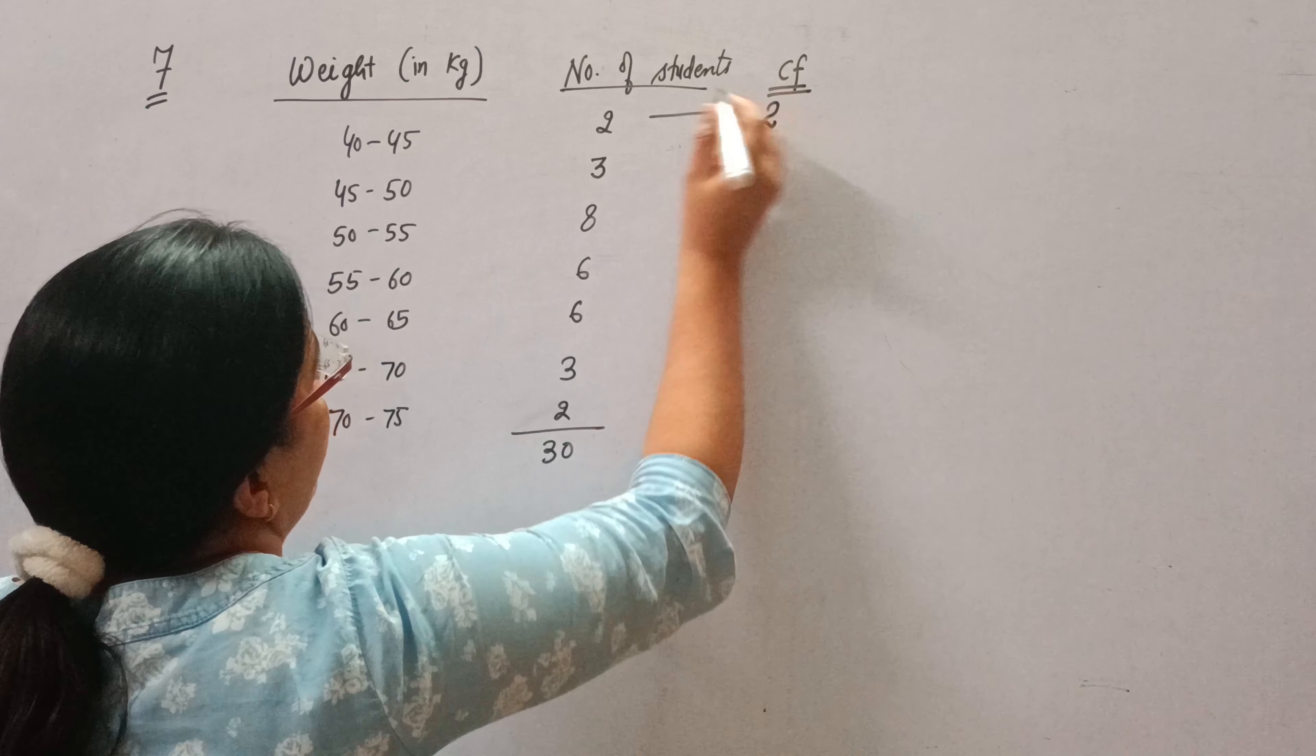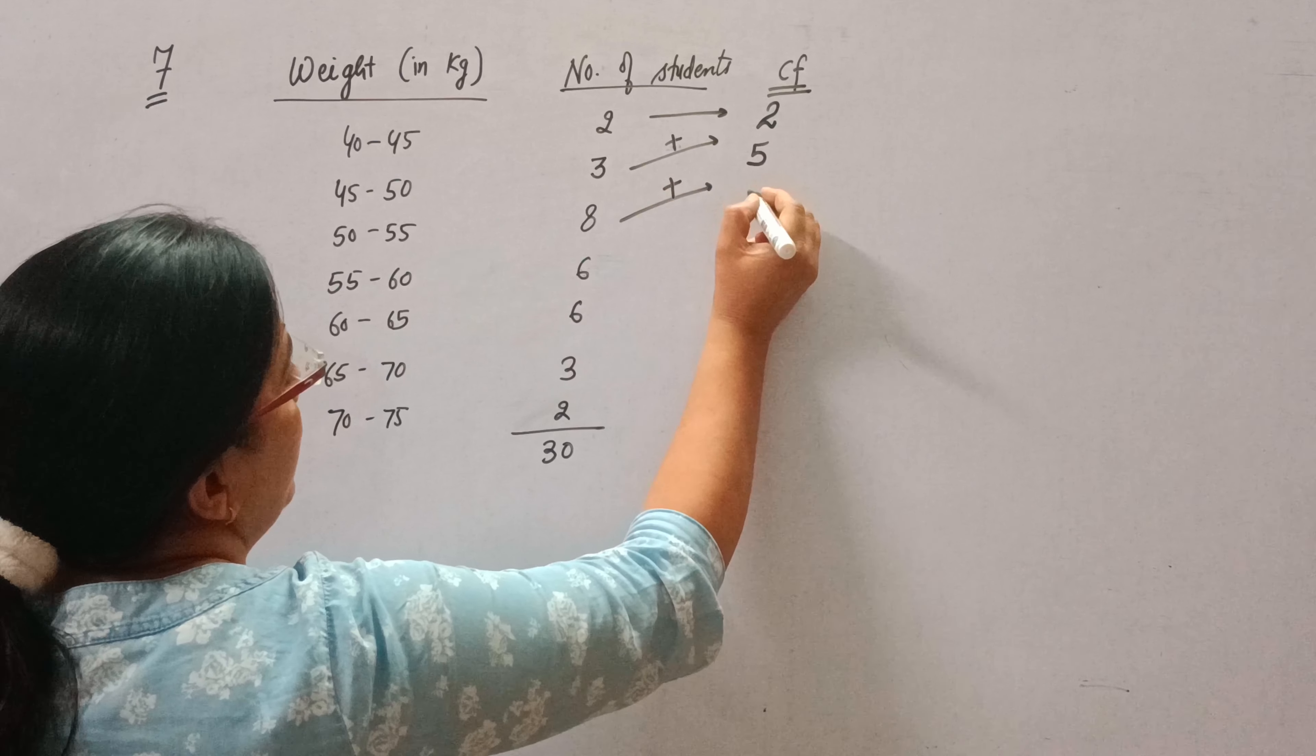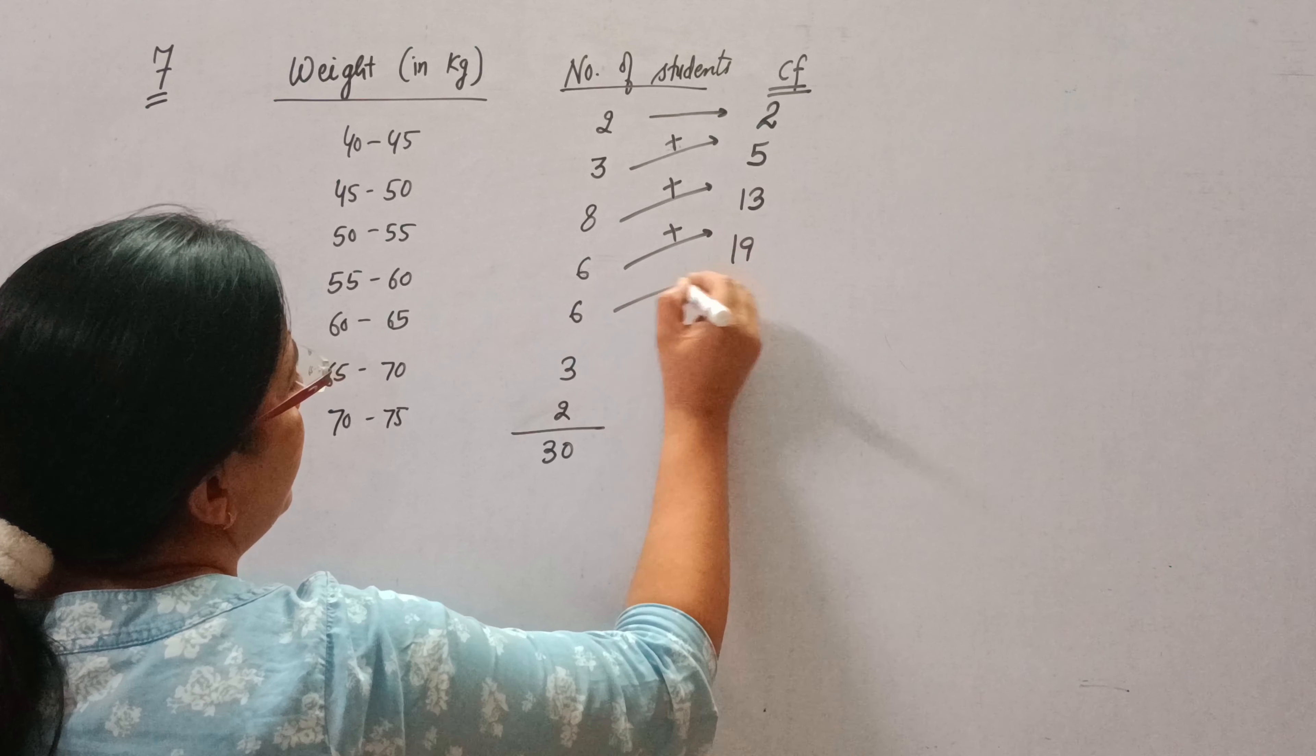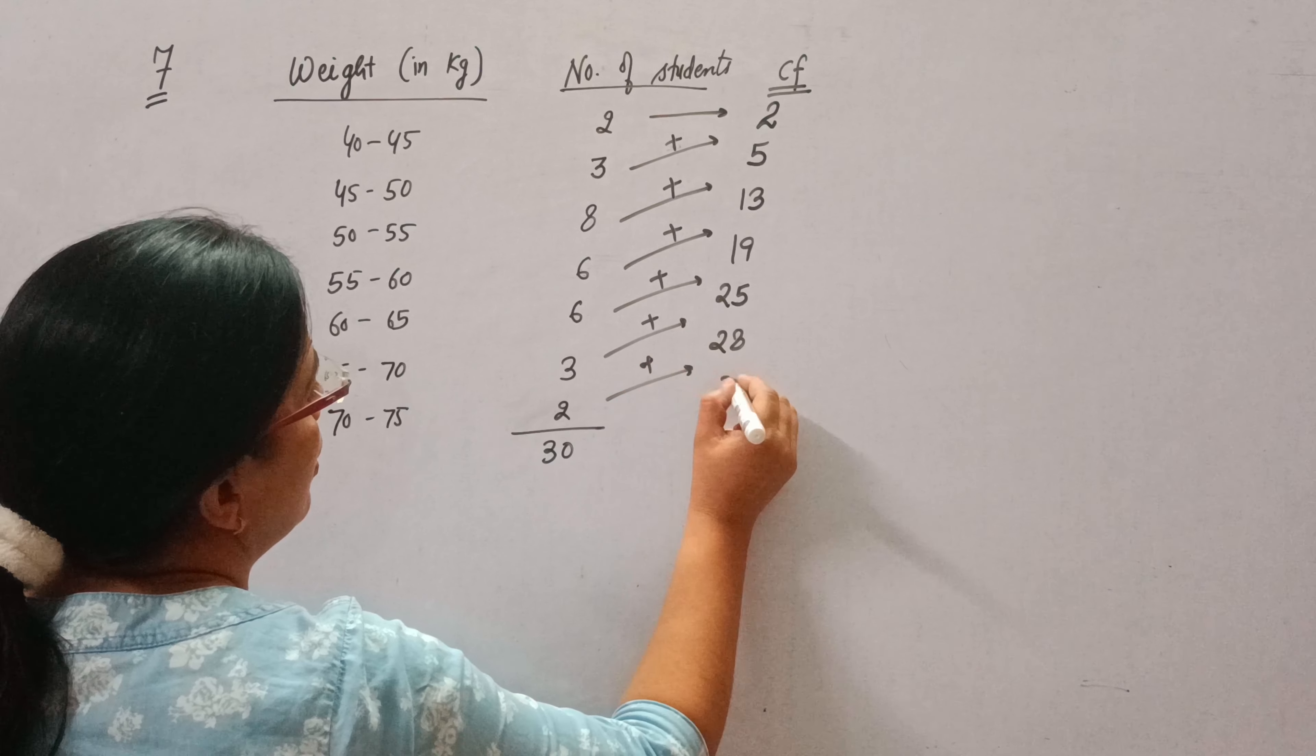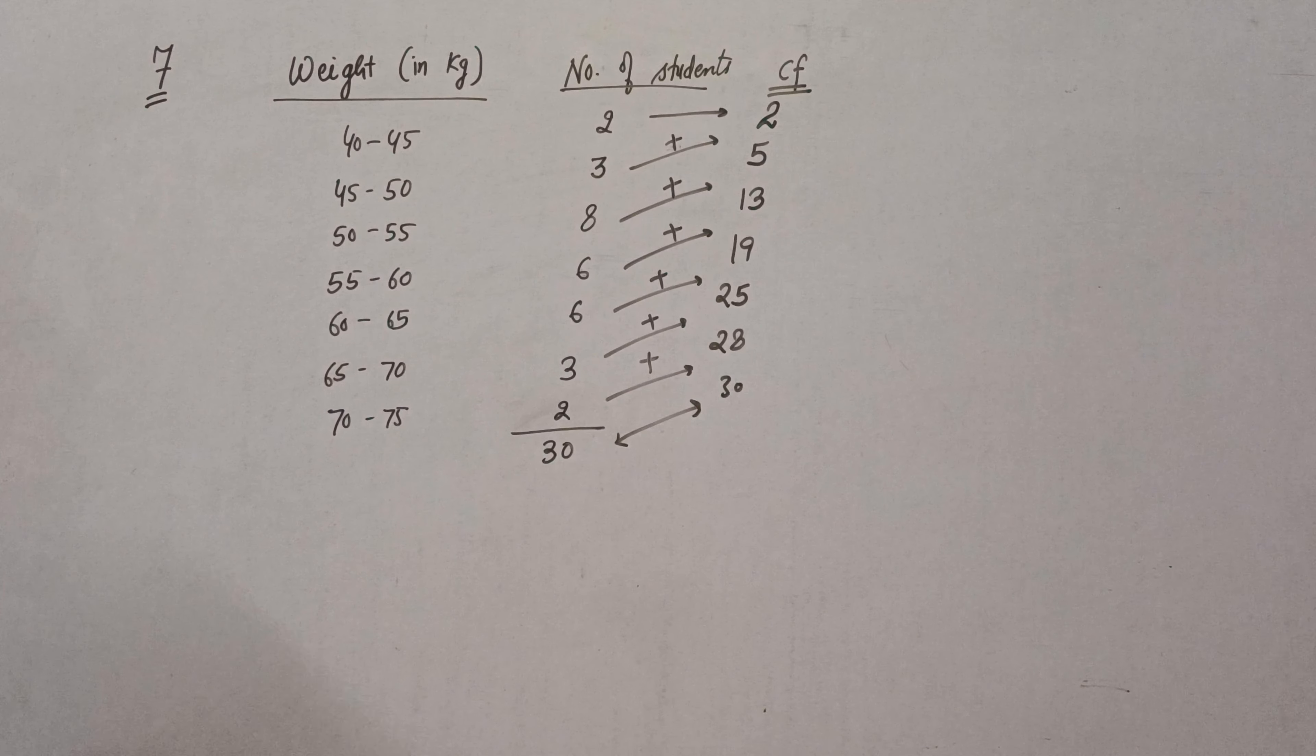So take first number as such and now add: 3 plus 2 is 5, 8 plus 5 is 13, 13 plus 6 is 19, 19 plus 6 is 25, 25 plus 3 is 28, 28 plus 2 is 30. So these two numbers are same, that means our cumulative frequency is correct.